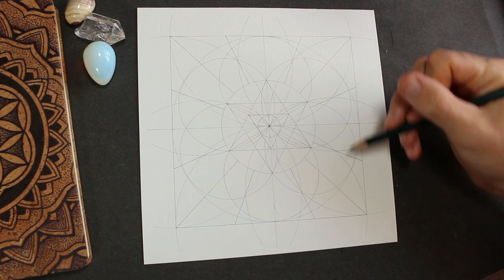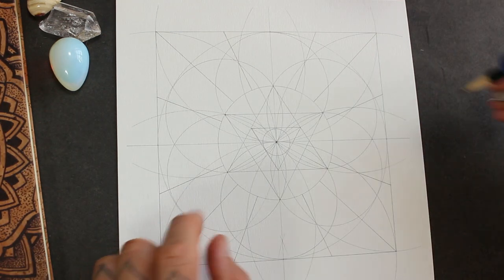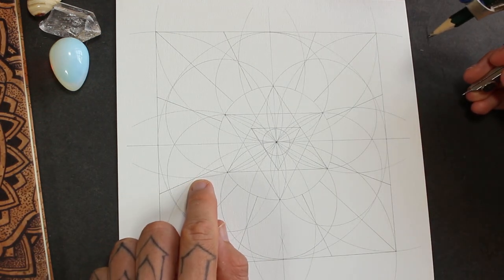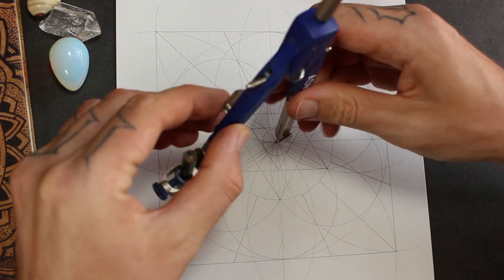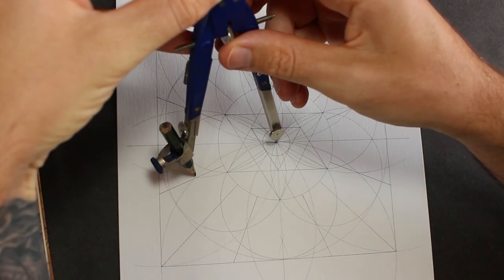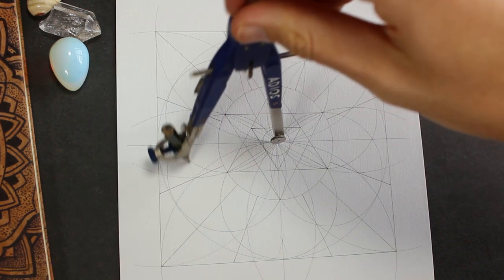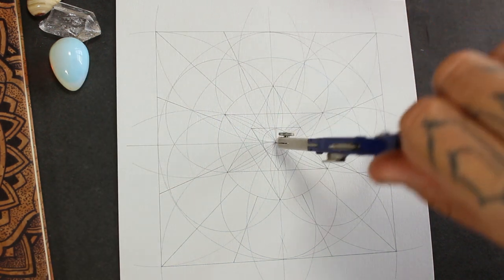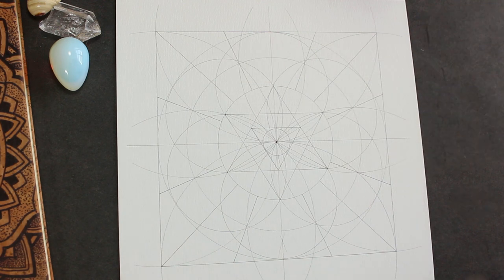1, 2, 3, 4, 5, 6, 7, 8. So now I'm going to use those points that we just used. I'm going to use the compass with them. I'll set the compass from the center to the tip of those petals. And I'll draw a circle. There.